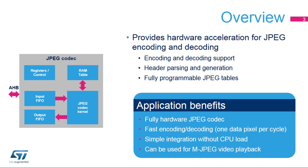The JPEG Codec integrated inside STM32 products is a hardware accelerator for JPEG image encoding and decoding. It includes a hardware JPEG header generator and parser for automatic JPEG file handling. All the JPEG tables needed for both encoding and decoding are fully programmable. As the JPEG Codec is fully implemented in hardware, it delivers one data pixel per cycle without any CPU load. Thanks to this flexible feature and its high level of performance, the JPEG Codec can be used for MJPEG video playback.